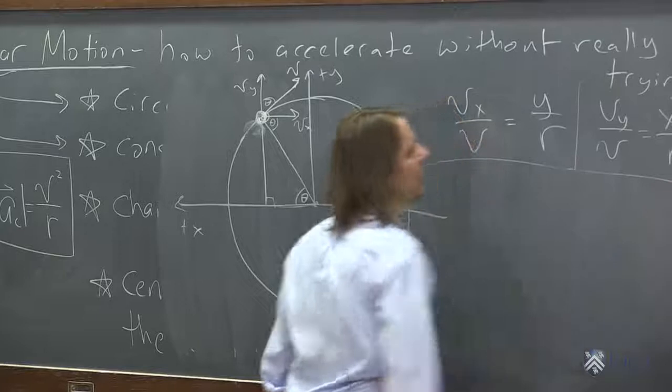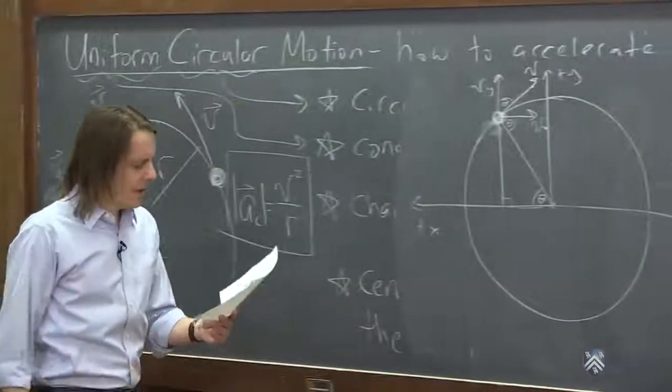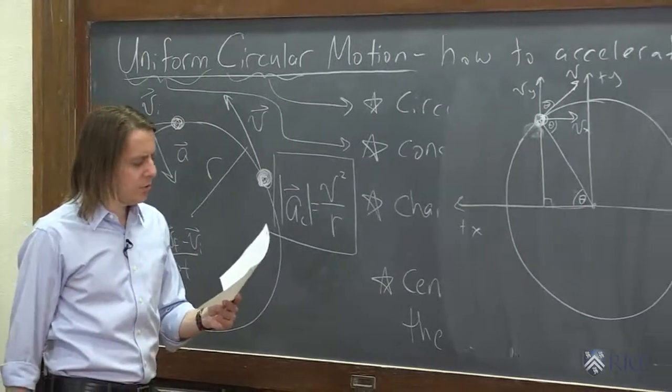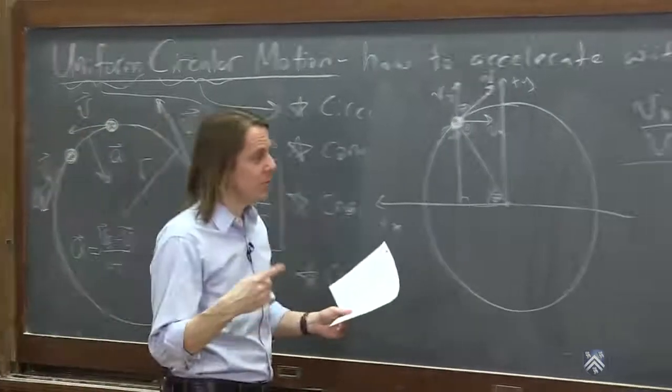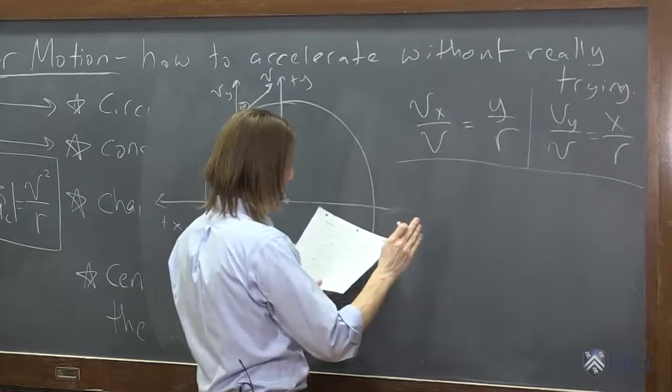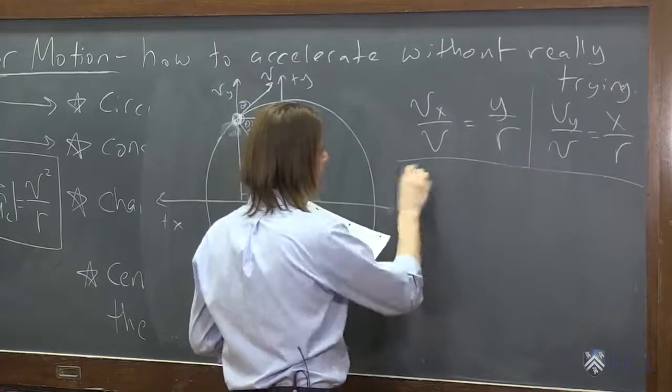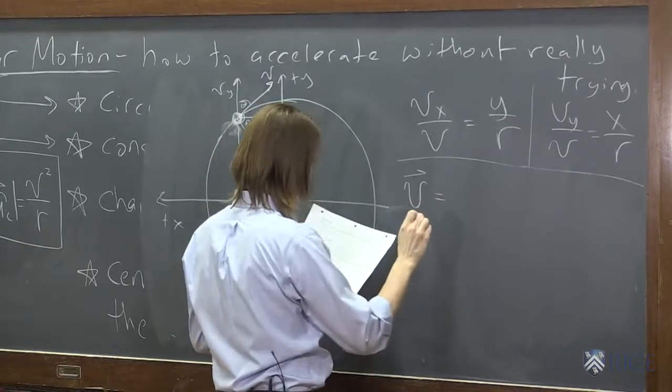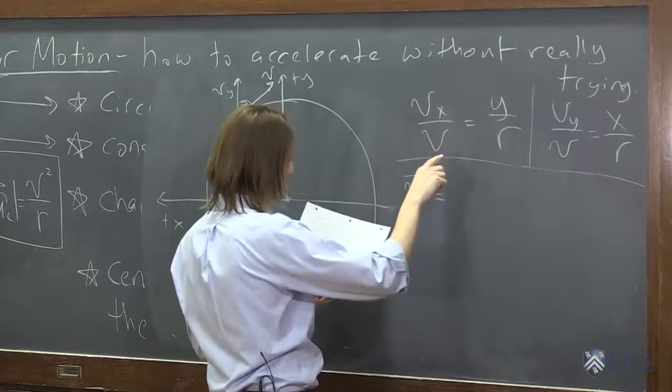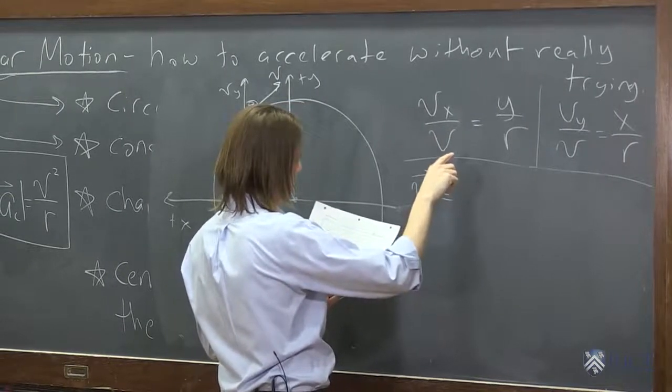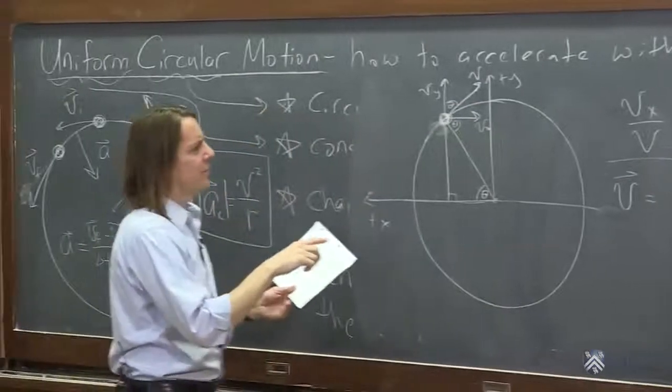And then we could also say let's now write the velocity using those components. Okay? We could say that the velocity vector, therefore, is equal to, let's see, the velocity.